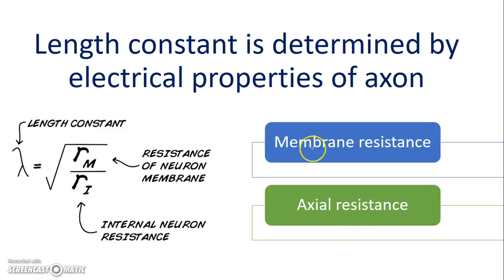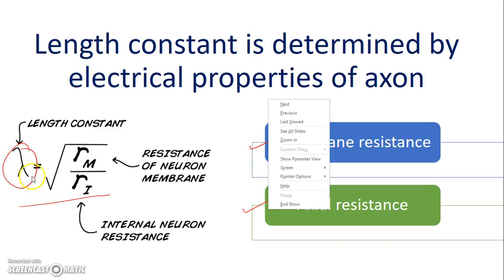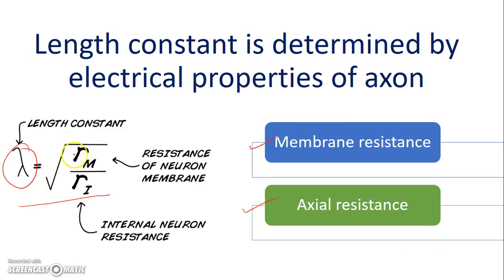The length constant of a neuron is determined by the electrical properties of the axon — mainly the membrane resistance and the axial resistance. The formula relating the length constant lambda to these properties is: lambda equals the square root of the membrane resistance divided by the internal neuron resistance, also called the axial resistance.